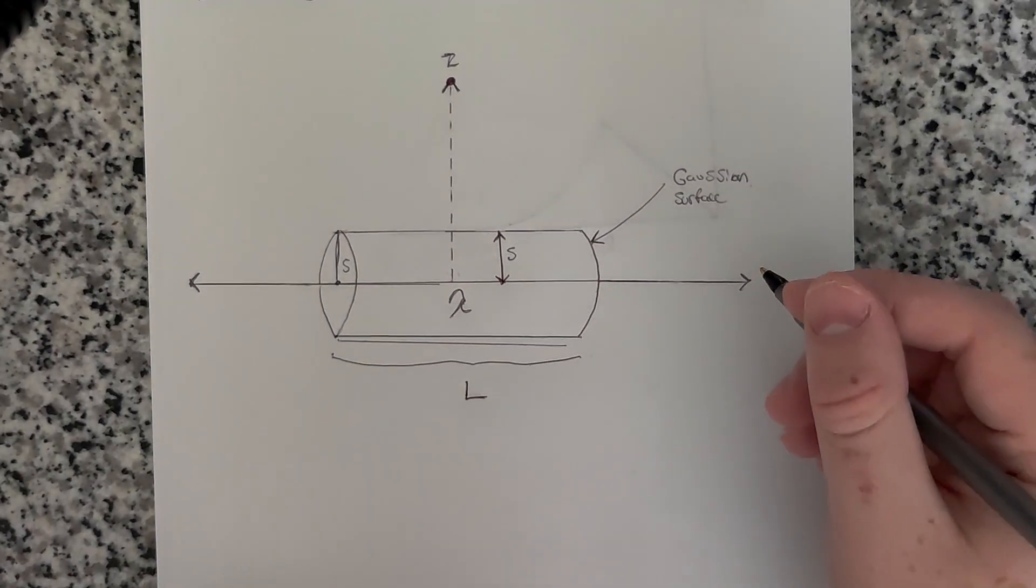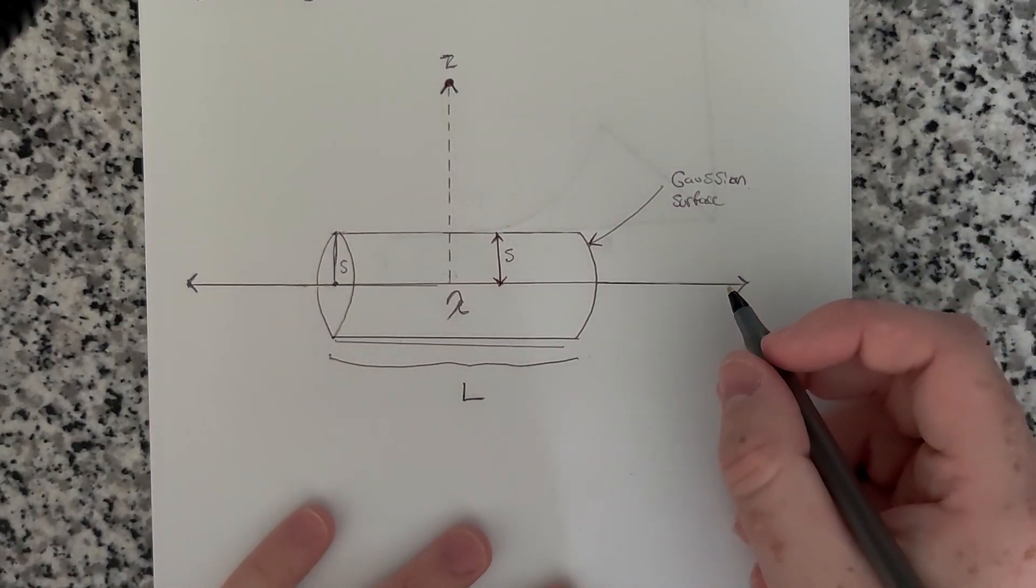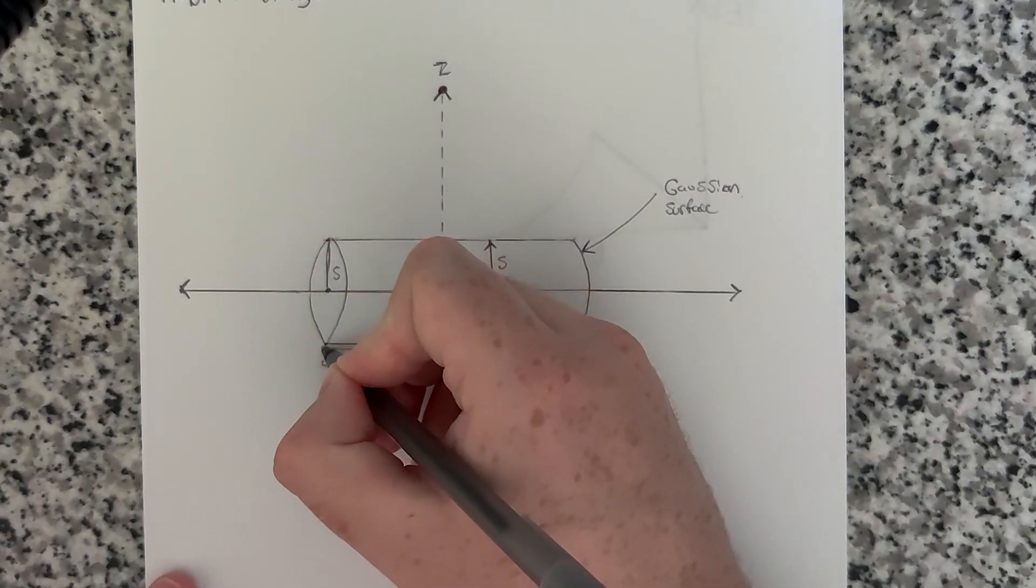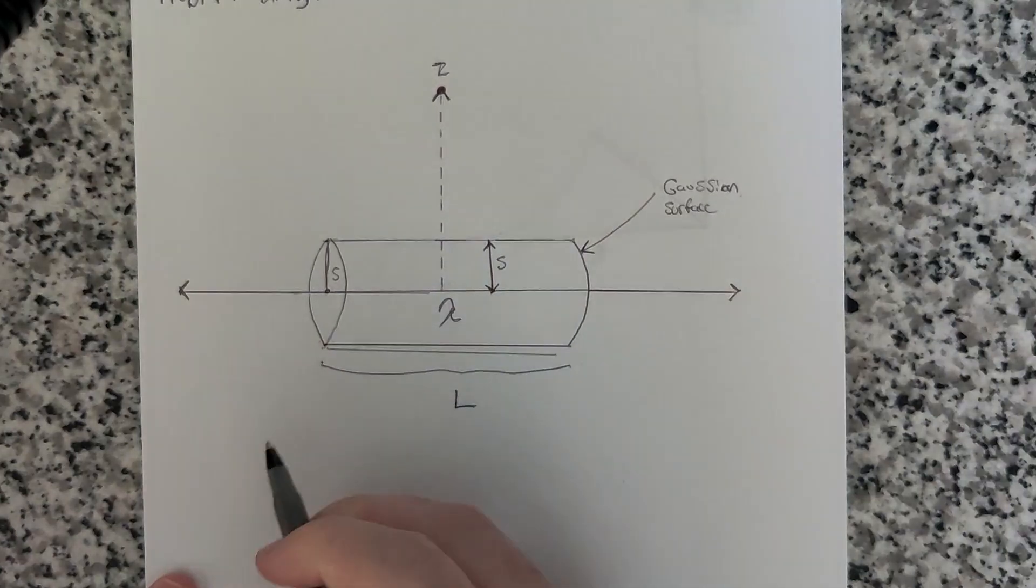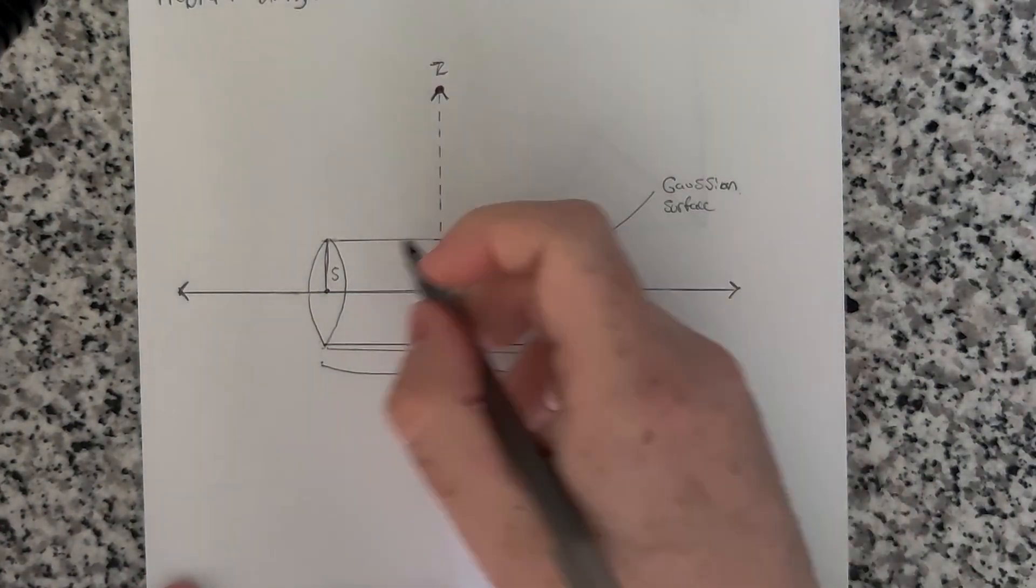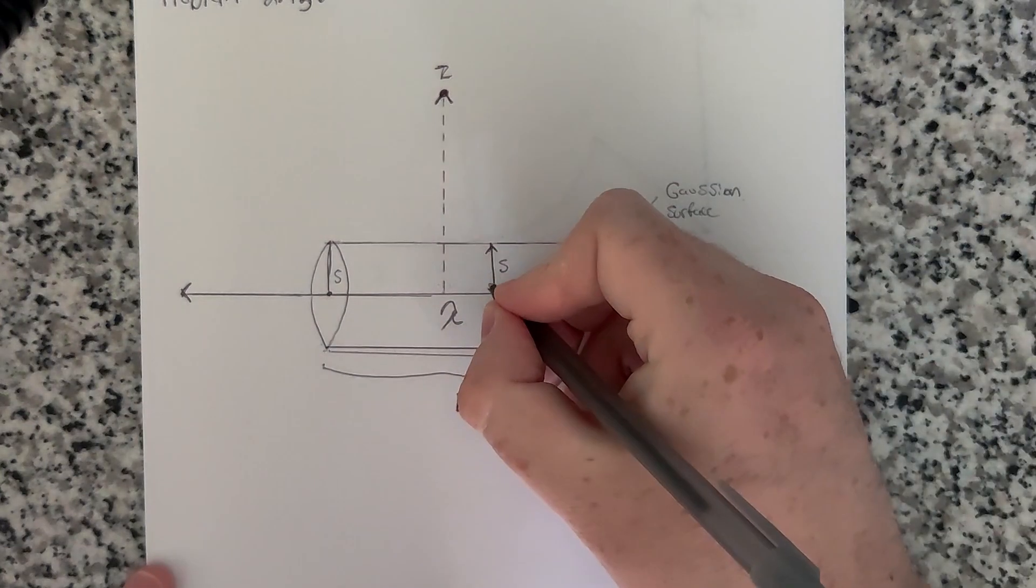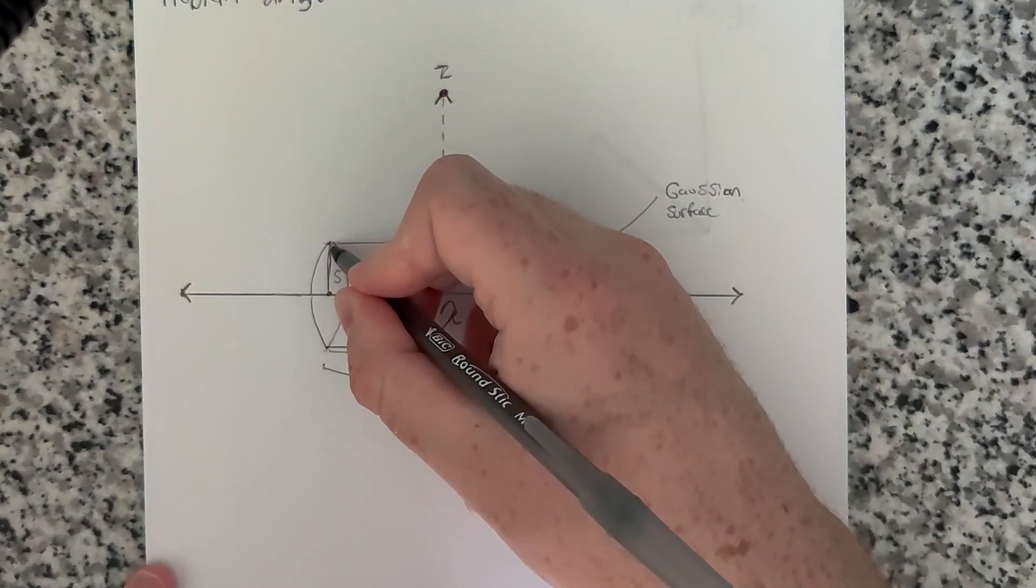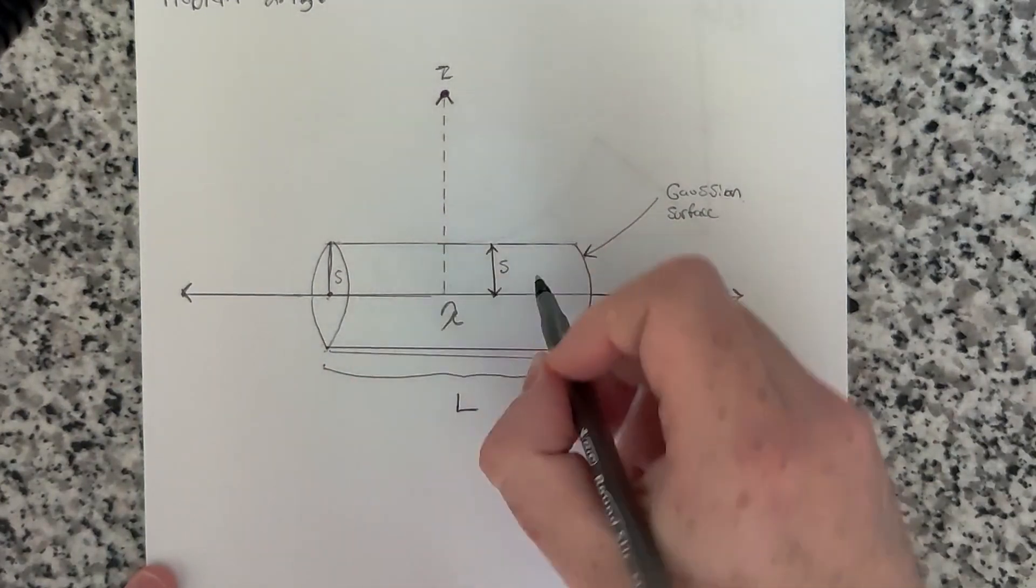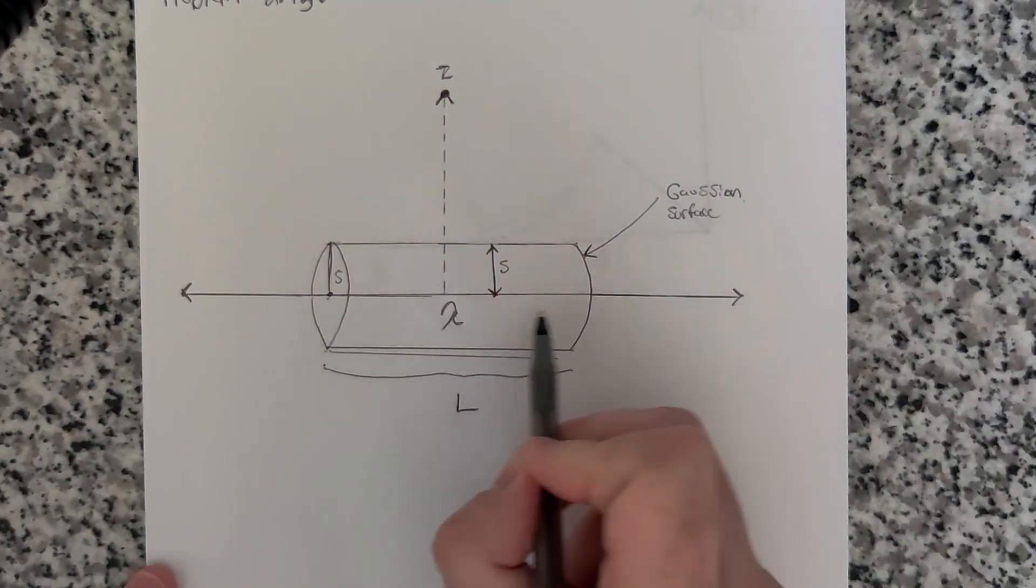So our Gaussian surface in this case to take advantage of the cylindrical symmetry, I've chosen to just surround a section of this wire. We'll say that this section of the wire has the length of L with our Gaussian surface. And our Gaussian surface has a cylindrical radius here of s. So that's just a distance from the axis of symmetry here along the cylinder.